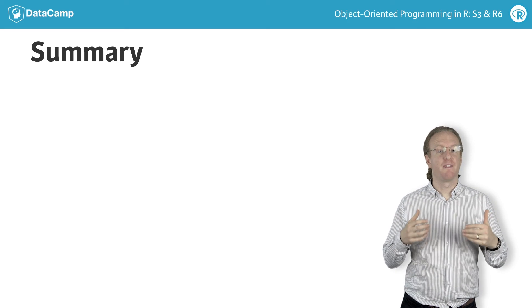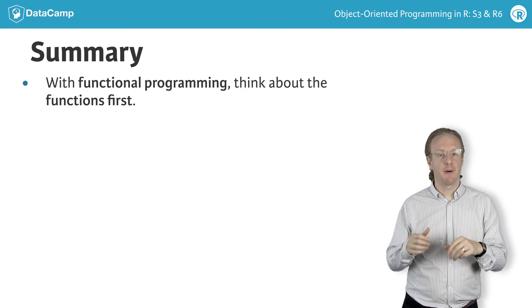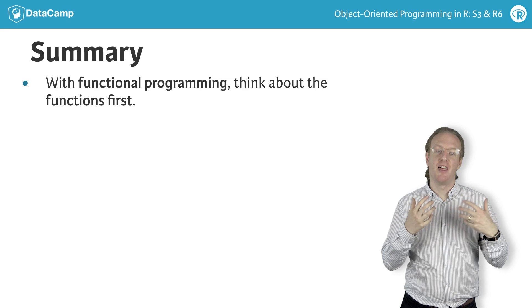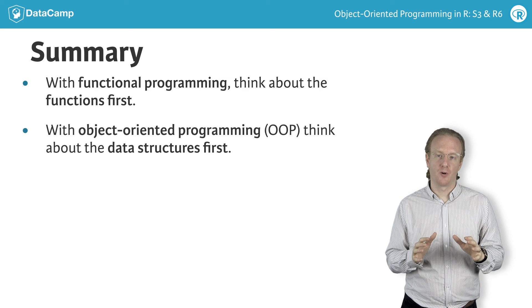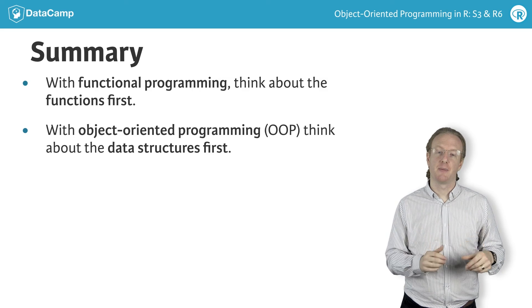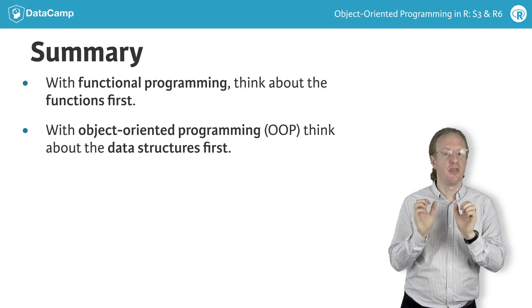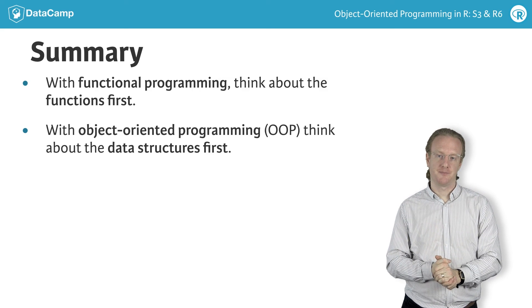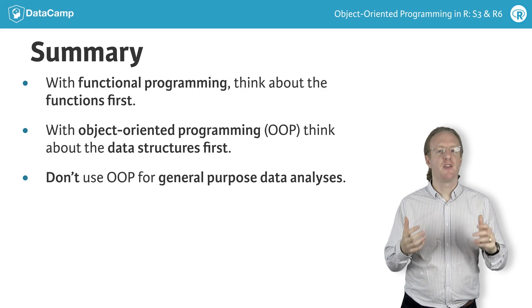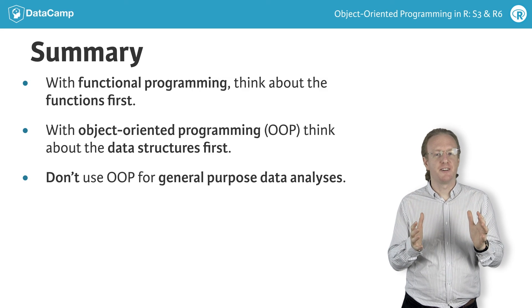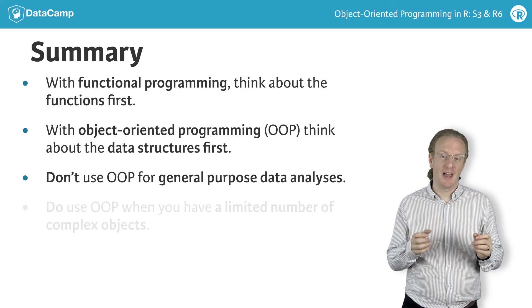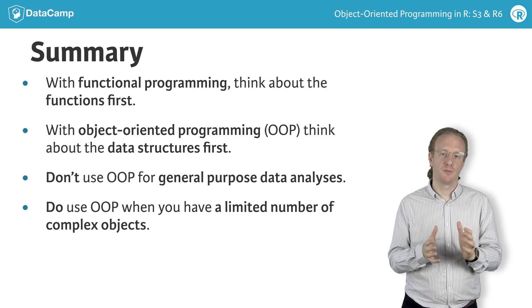To summarize, with functional programming, you think about the functions first, and then how you use them on your data. With object-oriented programming, by contrast, you think about the data structures first, and then worry about their functionality. For general purpose data analyses, the functional style is more appropriate. An object-oriented style is preferable when you have a limited number of complex objects.